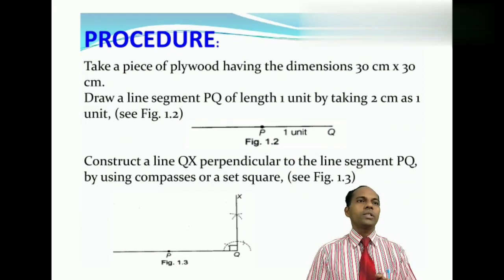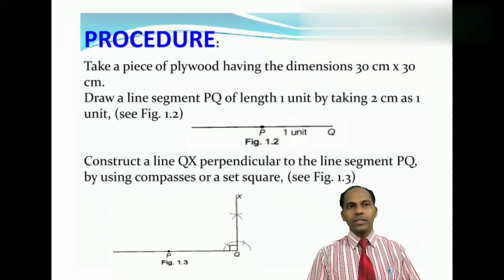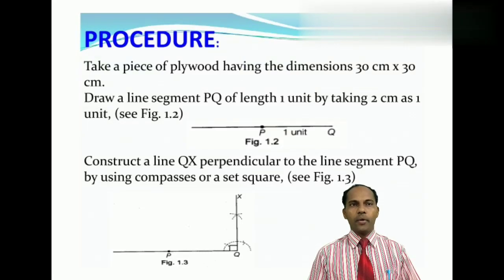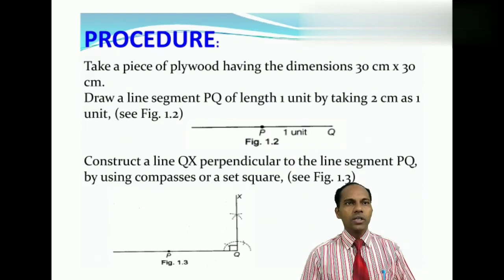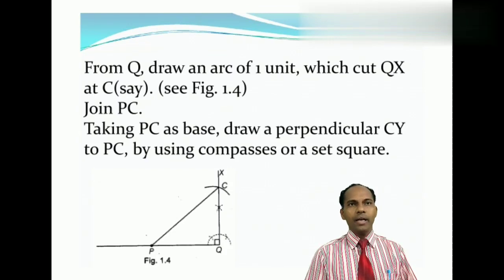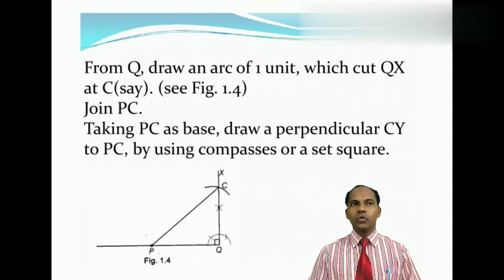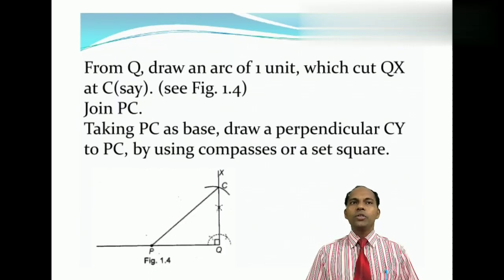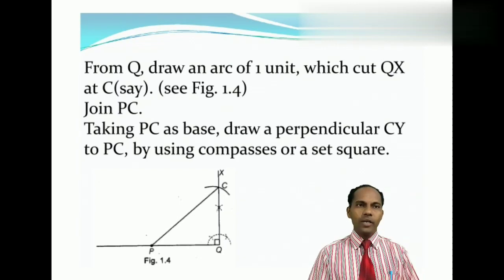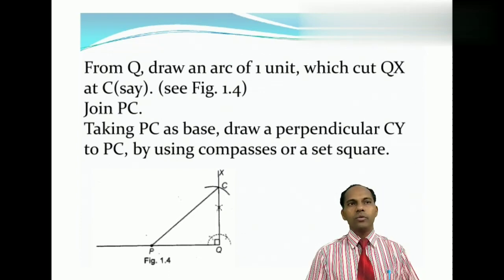I will show you how to draw this. And after that, we have to draw a line QX, which is perpendicular to the line segment PQ at the point Q. From Q, we have to draw an arc of 1 unit again, which is called QX at the point C. So we have to join P and C, which will be equal to root 2 because PQ is equal to 1 unit and QC is equal to 1 unit. So that PC will be equal to root 2.